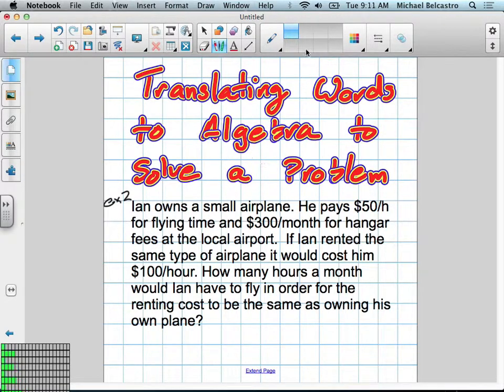It says Ian owns a small airplane. He pays $50 an hour for flying time and $300 a month for hangar fees at the local airport. If Ian rented the same type of airplane, it would cost him $100 an hour. How many hours a month would Ian have to fly in order for the renting cost to be the same as owning his own plane?